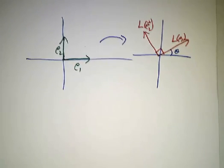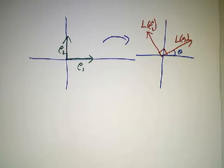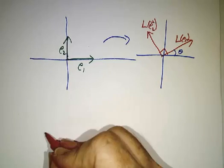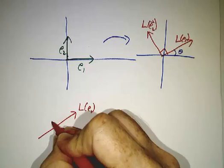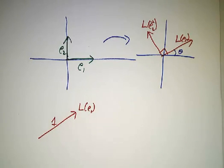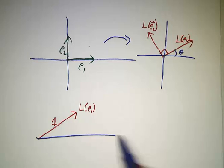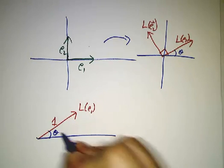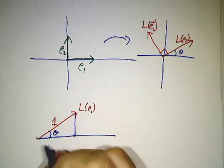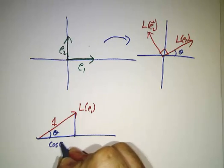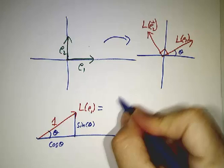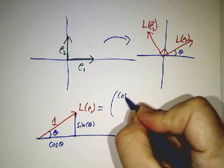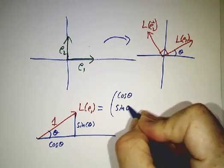So we have to do a little bit of trig. Here's L(e1) and it has length 1. Here's our x-axis and here's our angle θ. So the horizontal component must be cos θ and the vertical component must be sin θ. So L(e1) = (cos θ, sin θ).